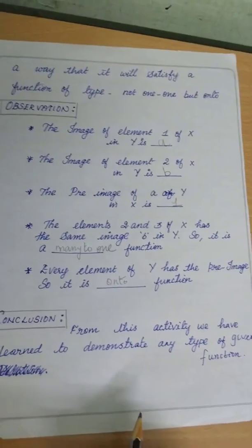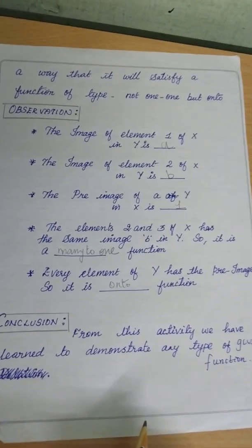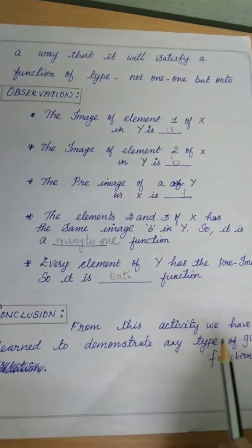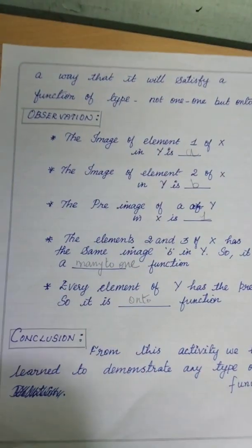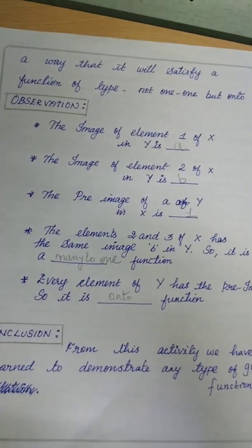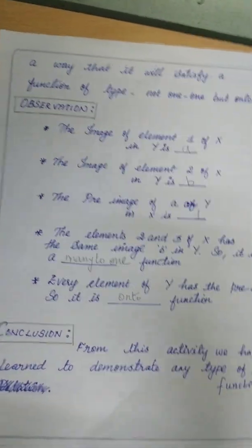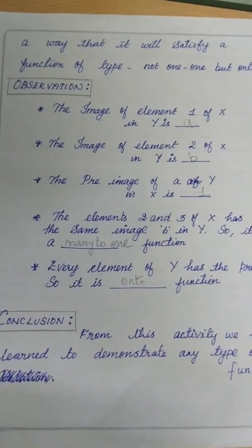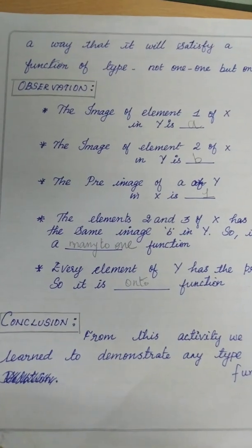From this activity we have learned to demonstrate the given function which is not one-to-one but onto. You can write the conclusion as: we have learned to demonstrate any type of given function, or specifically the given function — not one-to-one but onto. Hope this write-up part will help you. Once again I will show the fully written write-up part.